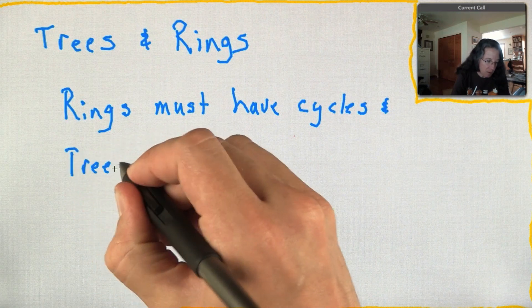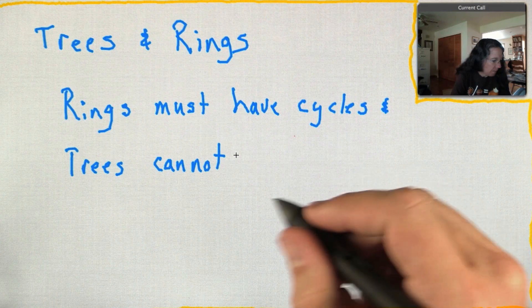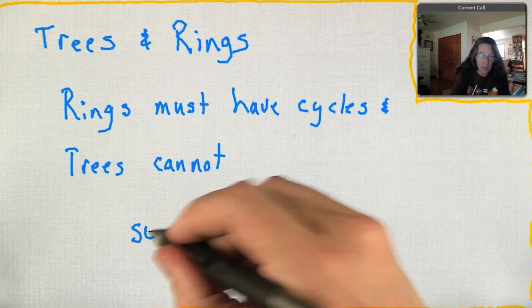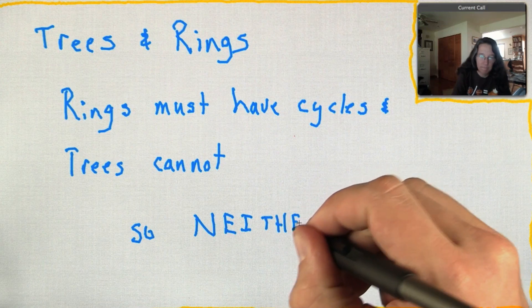They're definitely neither due to the definition of trees. A tree can have no cycles and a ring must have a cycle. So the answer is neither.